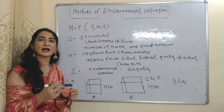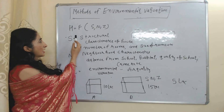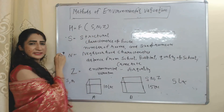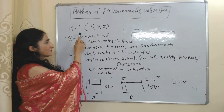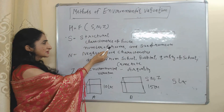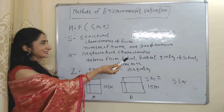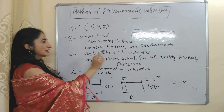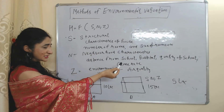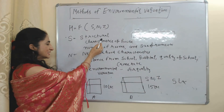With the help of an example, we will clearly understand the Hedonic Price Method. H is a function of S, N, and Z. Here H is the hedonic price, S means structural characteristics of the house like number of rooms, size of rooms, etc., and N is neighborhood characteristics of the house — for example, distance from school, hospital, quality of school, crime rate, etc.